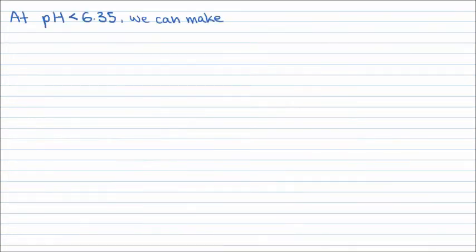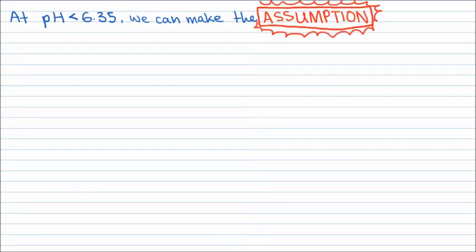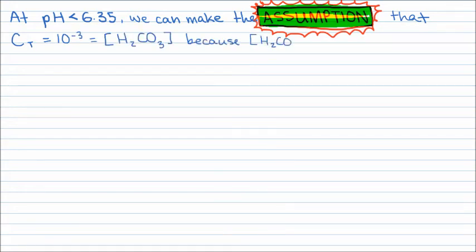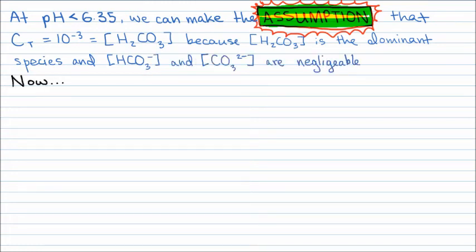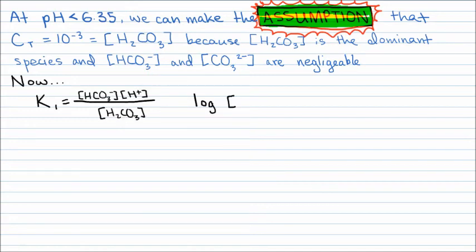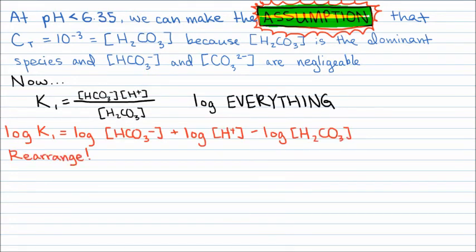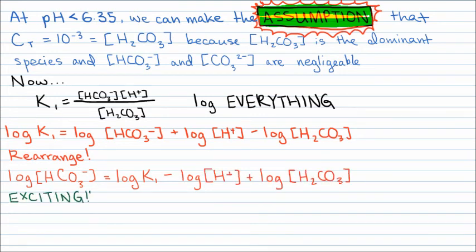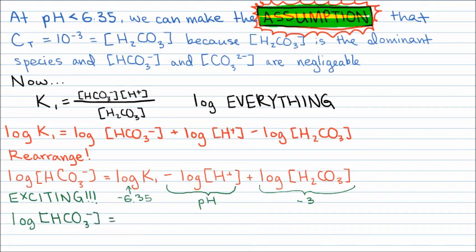We can calculate the slope of the lines on a Bjerrum plot. At pH less than 6.35, we make the assumption that the total carbon is equal to the total carbonic acid, because the other inorganic carbon species are negligible. Remember those equilibrium constants? We can manipulate them to find the slope of the line — log everything and rearrange. Log K1 equals negative 6.35. Negative log of proton concentration is pH, and since we assumed carbonic acid concentration equals CT, log of carbonic acid concentration equals negative 3. Therefore, the log of bicarbonate ion concentration equals negative 9.35 plus pH, which is the equation of a line.